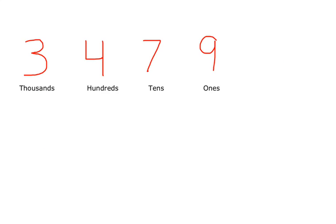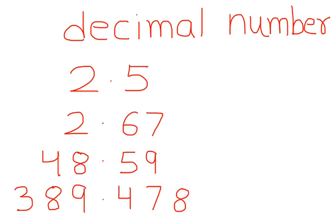Now remember that decimal means a point, a dot. When we deal with the decimal system, we put a point after the ones place and then move from left to right. A decimal number looks like 2.5, 2.67, 48.59.